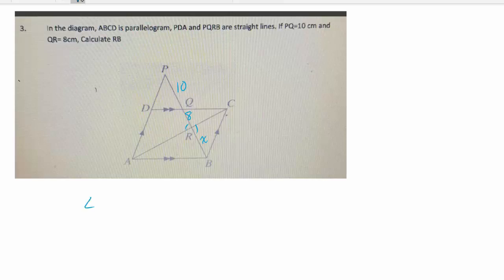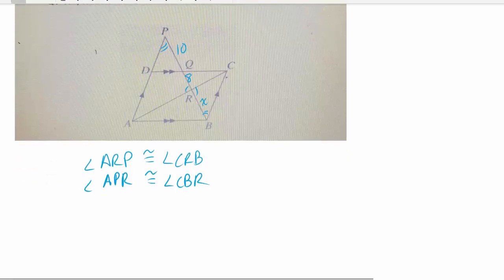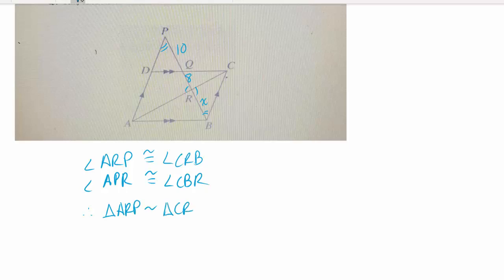So that's angle ARP, which is congruent to angle CRB. And then the parallel lines give us some congruent angles, because the parallel lines are cut by a transversal. So angle APR is congruent to angle CBR. Now, two congruent angles in two triangles gives us similar triangles. So triangle ARP is similar to triangle CRB.